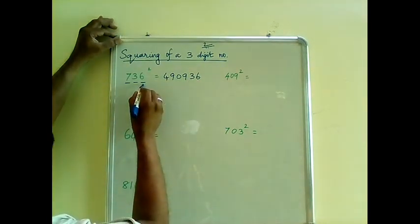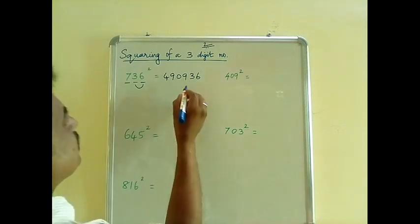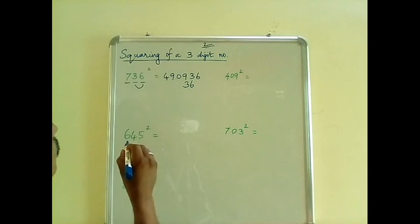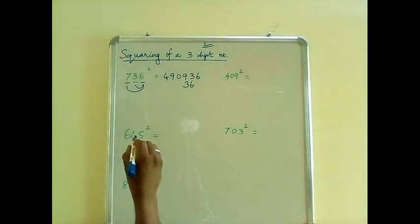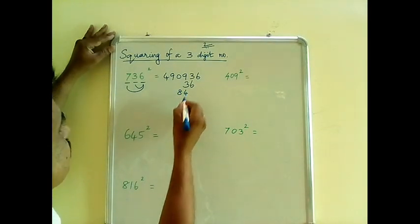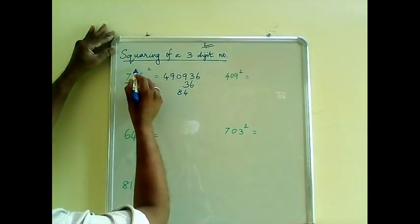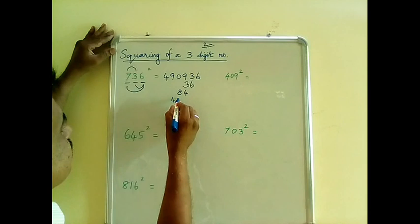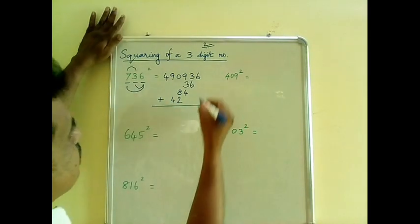Now find out 2bc first. 2bc is nothing but 36 — write it here. And 2ac: 2ac is 84 — write it here, one digit left to that. And 2ab is nothing but 42 — write it here. If you simply add this, you will get the answer.